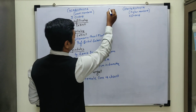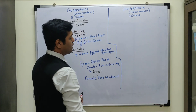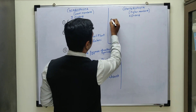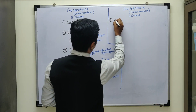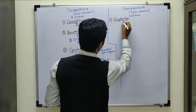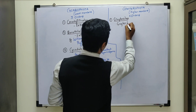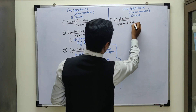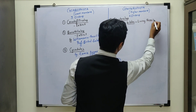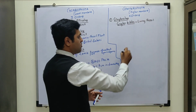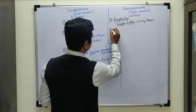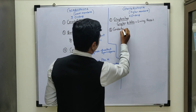Moving to the next group, Coniferophyta, where four orders are going to be discussed. One of the orders is known as Ginkgoales. In Ginkgoales, one member is known as Ginkgo biloba. This plant is considered a living fossil, meaning some of the members are fossilized and some are still living. That is about the order Ginkgoales.